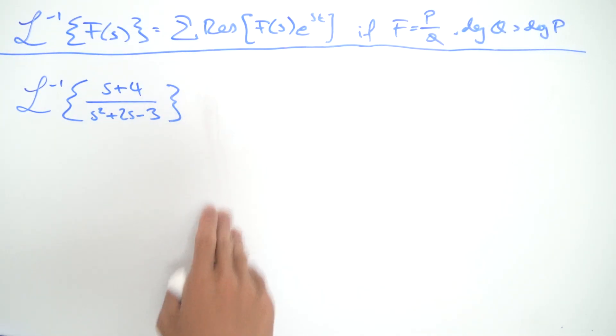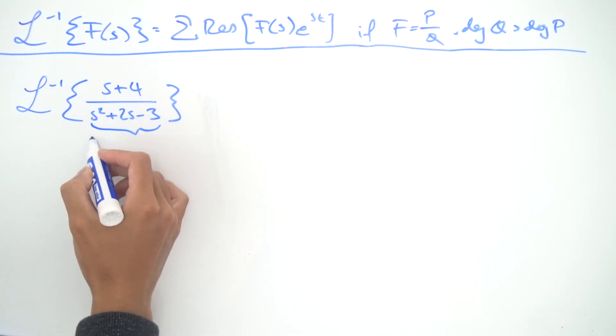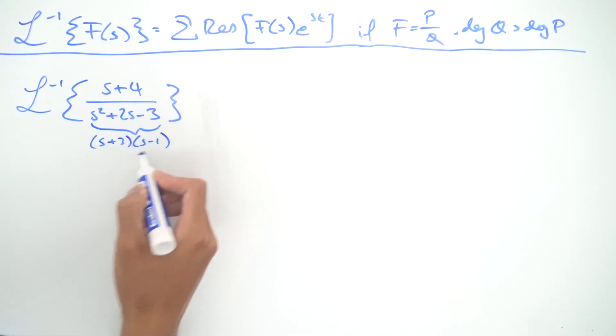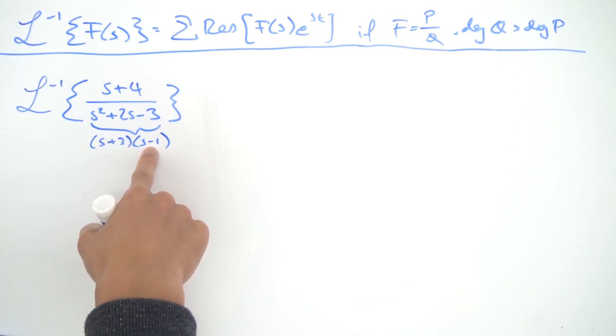So in order to use this formula we first have to find where the poles of this function are, and to do so notice that this denominator we can write this as (s+3)(s-1) so just factoring it, which means we have poles at minus three and one.